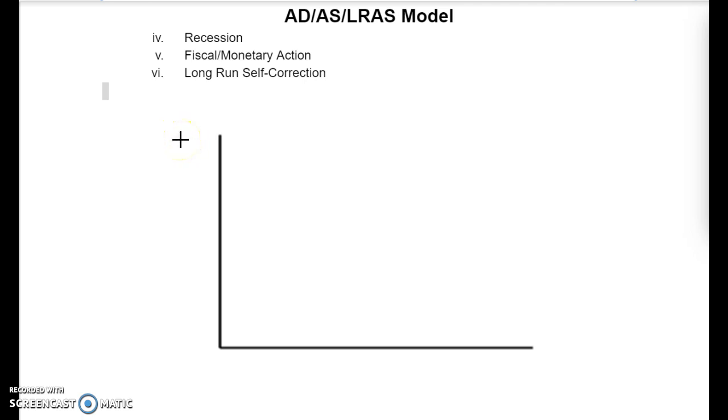So whenever we're doing AD/AS/LRAS, we have to remember that we're looking at an entire nation, and everything is an aggregate. So on our y-axis, it's not going to be price. It's going to be price level. And on our x-axis, it's not just going to be quantity. It's going to be GDP, which is the quantity of all products being produced. I pop that little R on there so that they know that I know that it's real GDP. That's never a bad thing to do.